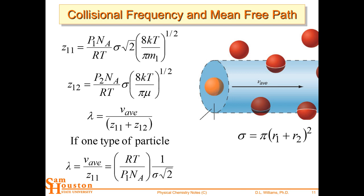The Z₁₁ and Z₁₂ are collisional frequency calculations. Z₁₁ is particle 1 colliding with other particle 1s; if you have two or more gases, particle 1 colliding with particle 2 would be Z₁₂. Z₁₂ and Z₂₁ are going to be the same. Lambda is the mean free path — notice it uses the average velocity, not the root-mean-squared, over the collision rate. If you just have one type of particle, Z₁₂ disappears and you end up with just the average velocity over the collision rate.